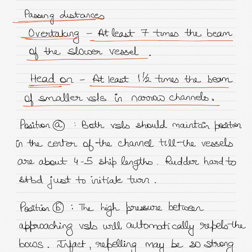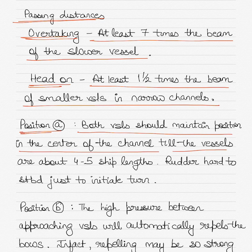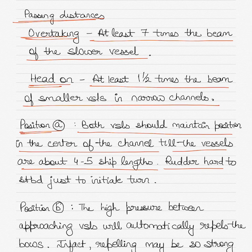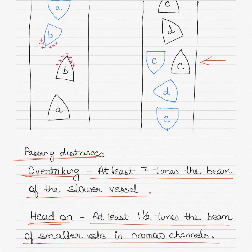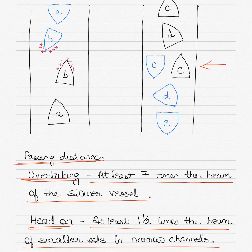In the head-on situation diagram, the positions are marked by letters A, B, C, D, and E. In position A, both vessels should maintain position in the center of the channel until the vessels are about 4 to 5 ship lengths apart. Rudder hard-over to starboard should then be initiated to turn the vessel.